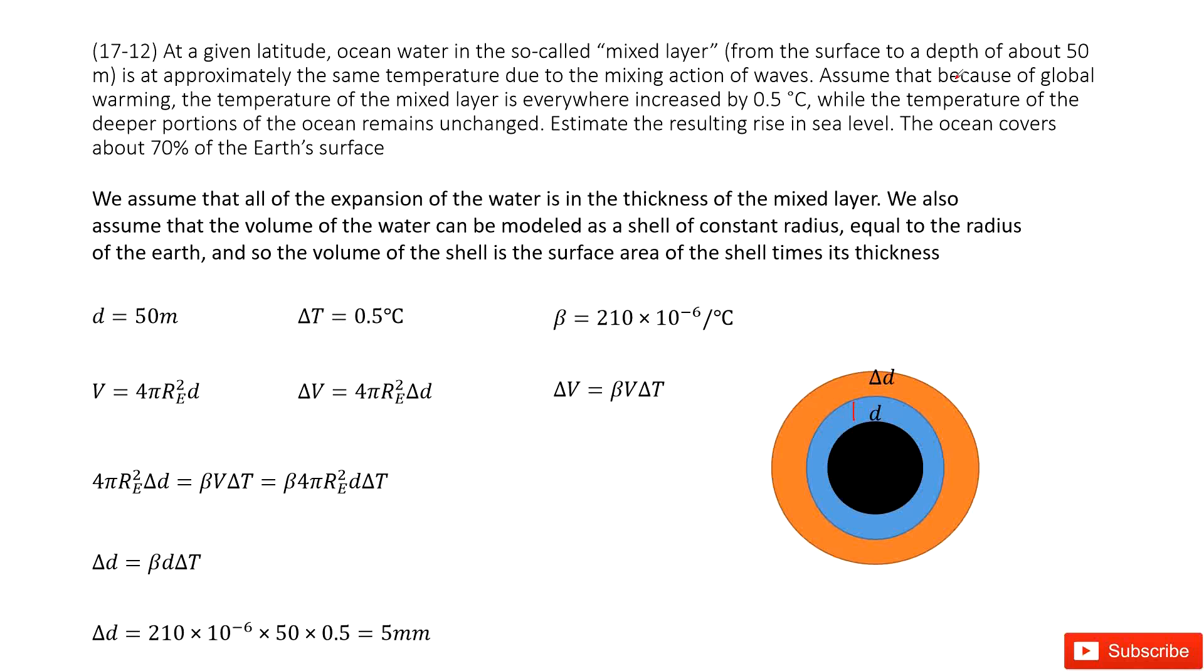And as it tells us, when global warming occurs, the temperature for this mixed water will increase to 0.5 degrees. So there is a ΔT of 0.5 degree, and there will be thermal expansion.